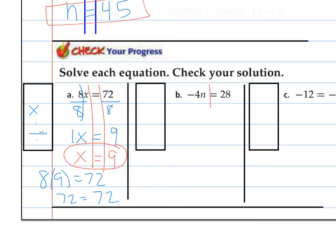Remember to pause and try them on your own when you can. N is being multiplied by negative 4, so I divide by negative 4. Negative 4 divided by negative 4 is 1. I'm left with 1N. 28 divided by negative 4. I have a positive divided by a negative, which I know is a negative, and I get negative 7. Check my answer. Negative 4 times negative 7 should be 28. Negative times a negative is a positive, and it is 28.